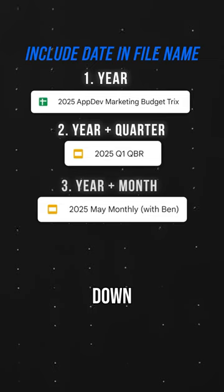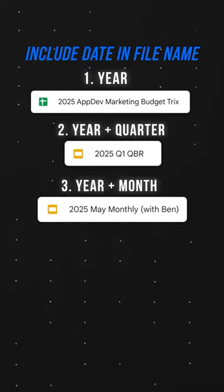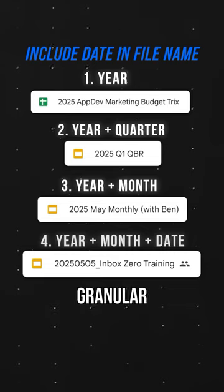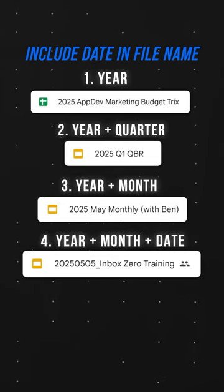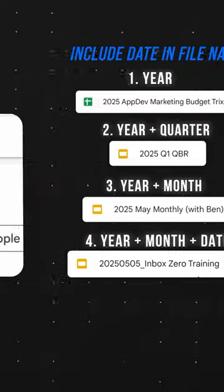One more level down, add a month: '2025 May monthly presentation with director.' And the most granular: '2025 0505 inbox zero training for the sales team.'